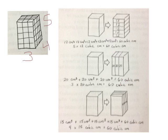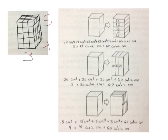We could slice the rectangular prism vertically instead of horizontally. Going from left side to right side, we would get 3 slices with 20 cubes each because they are 4 by 5 — 3 times 20 cubic centimeters equals 60 cubic centimeters. Another way to slice it vertically would give slices that are 3 across and 5 high, or 15 cubes each, and we would have 4 of those — 4 times 15 cubic centimeters equals 60 cubic centimeters.